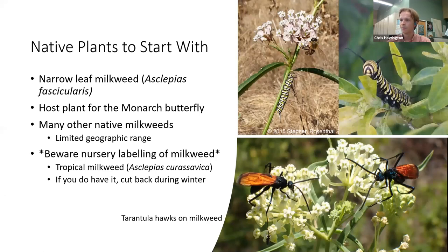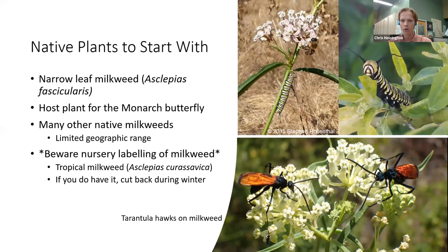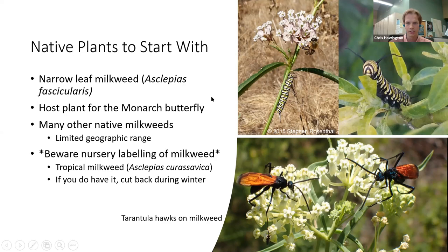On the bottom here are two tarantula hawks on narrowleaf milkweed. Tarantula hawks are a fantastic wasp species found in the Southwest — really a fantastic predatory insect. Apparently they have one of the most painful insect stings in the world, potentially top five. Monarchs are not the only species that loves milkweed, but the life cycles of a native milkweed and of a monarch butterfly are extremely intertwined. I'd suggest planting milkweed habitat wherever you can — it's going to have a benefit for the monarch butterfly.